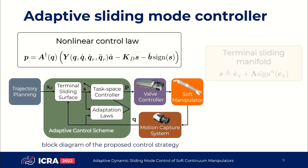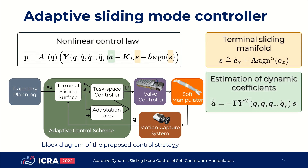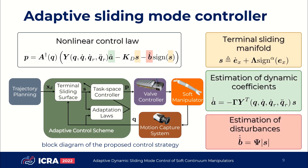Let's move on to the controller design. Our controller uses a terminal sliding manifold to enhance the transient response of the robots. In addition, we have introduced two adaptation laws: one for estimating the dynamic coefficients of the robots online, and a second one designed to compensate for disturbances that may arise during robot operations.